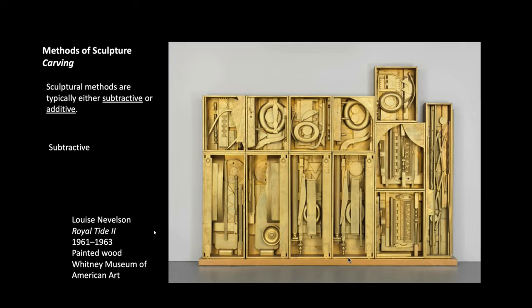She knew the shape she wanted to unlock or release from the wood. It's almost like we've unlocked a look into a watch, an elevator, or some sort of mechanical device, maybe even a computer. She's carving out the negative space around the object to create this positive image. That's one method — carving.